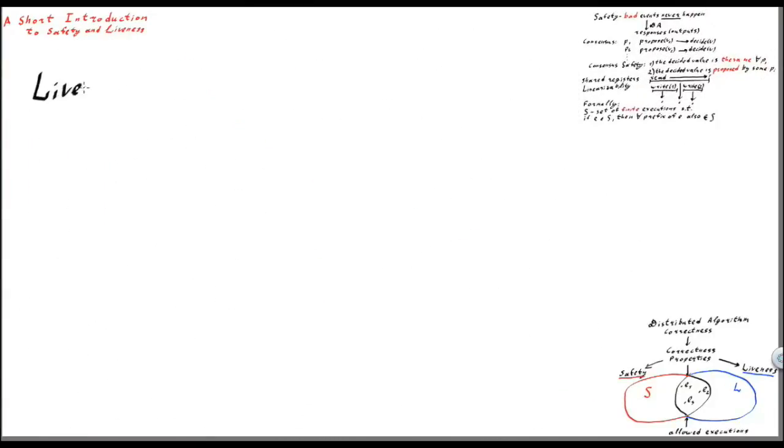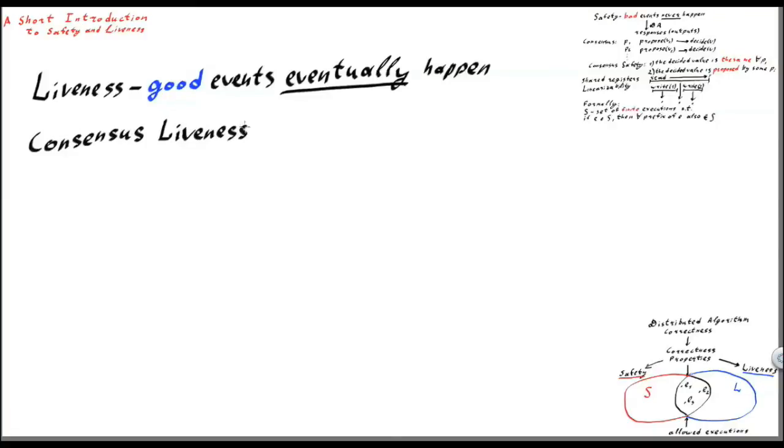A liveness property, on the other hand, states that some good events should eventually happen. For example, if we consider a shared consensus object, then its liveness property states that any process should eventually decide a value.